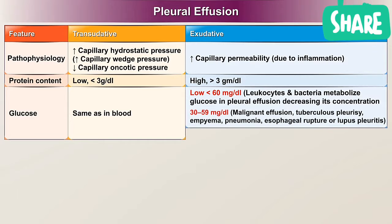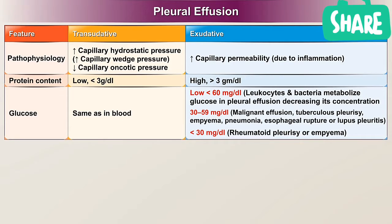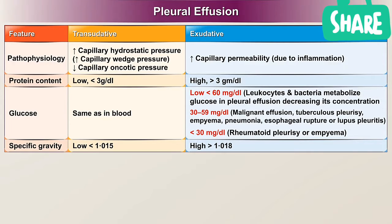Glucose of 30 to 59 mg per deciliter suggests malignant effusion, tuberculosis pleurisy, empyema, pneumonia, esophageal rupture, or lupus pleuritis. Less than 30 mg per deciliter suggests rheumatoid pleurisy or empyema. Specific gravity for transudates is low, less than 1.015, and it is high for exudates, more than 1.018.